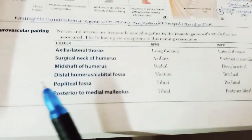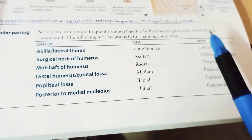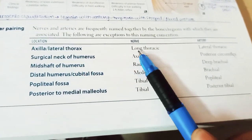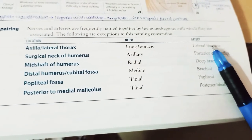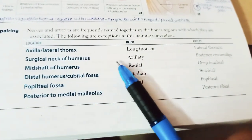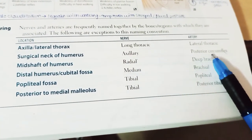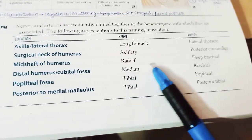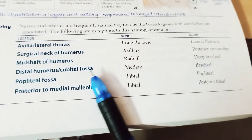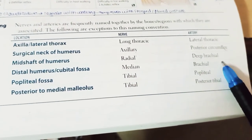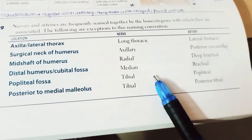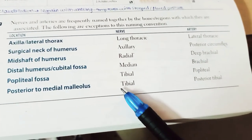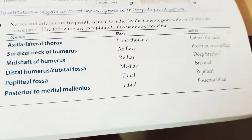Now let's see neurovascular pairings by location. In the axilla or lateral thorax: long thoracic nerve and lateral thoracic artery. Surgical neck of humerus: axillary nerve and posterior circumflex artery. Mid-shaft of humerus: radial nerve and deep brachial artery. Distal humerus/cubital fossa: median nerve and brachial artery. Popliteal fossa: tibial nerve and popliteal artery. Posterior to medial malleolus: tibial nerve and posterior tibial artery.